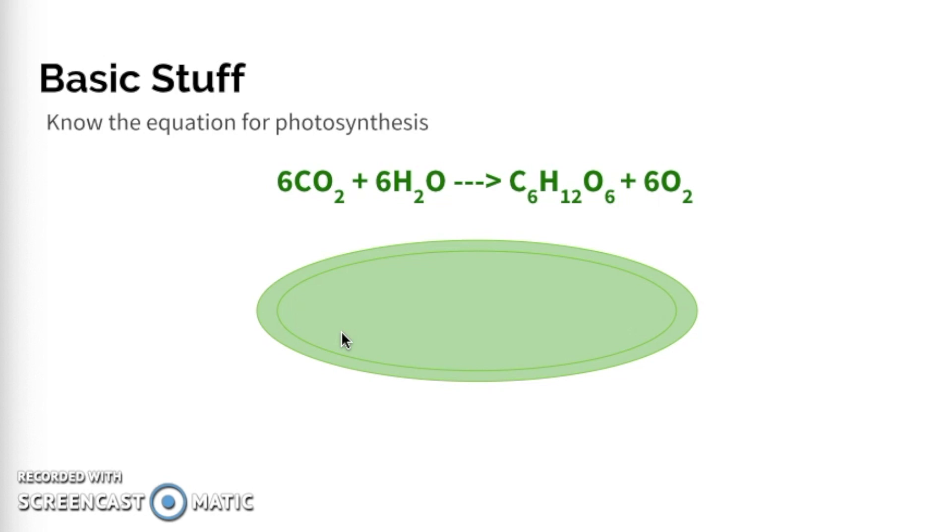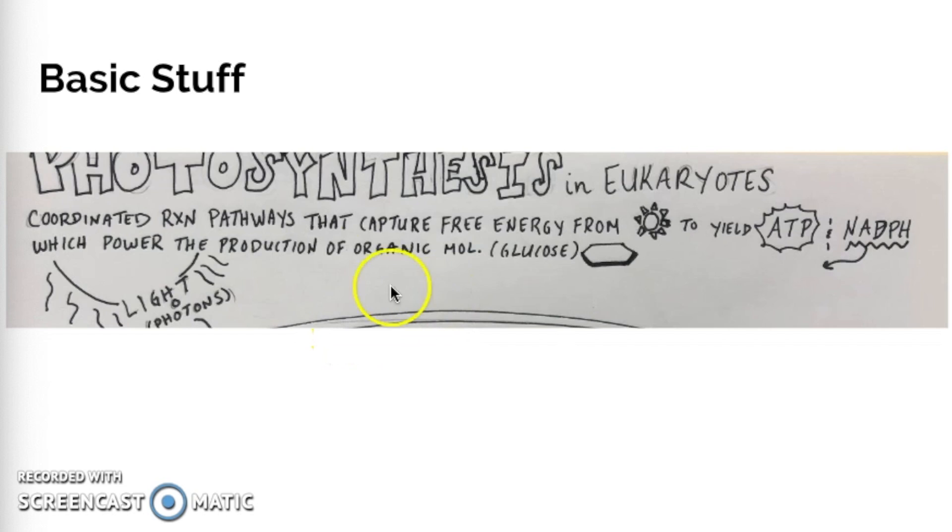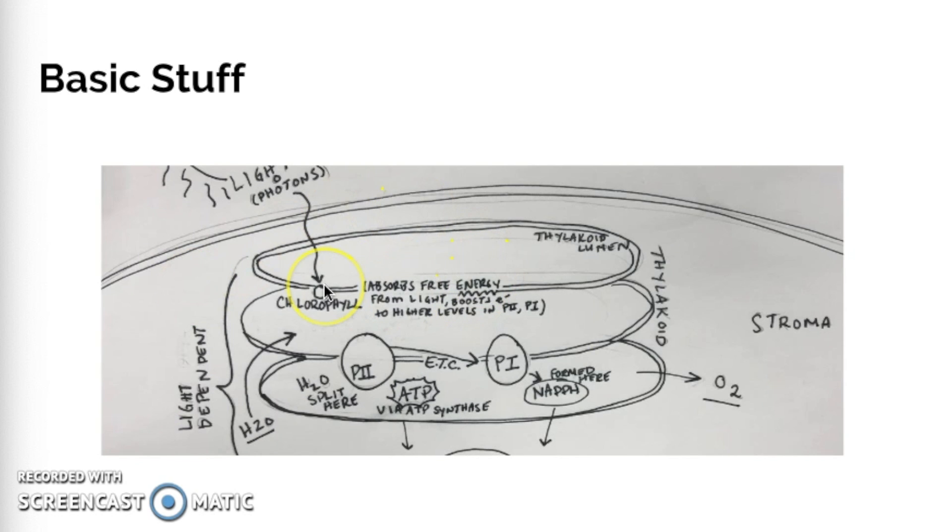That energy is then used to create our organic molecules like glucose. During photosynthesis, we're going to have chlorophylls absorbing the free energy from the light and boosting electrons to a higher energy level in photosystems one and two. There's lots of different types of chlorophyll, but the one we talk about for the most part in AP Biology is chlorophyll A. Photosynthesis is a series of coordinated reaction pathways that capture free energy from sunlight to yield ATP and NADPH, which power the production of an organic molecule, which is glucose.